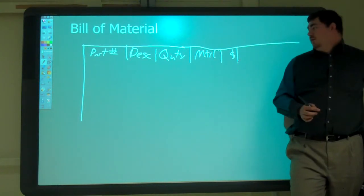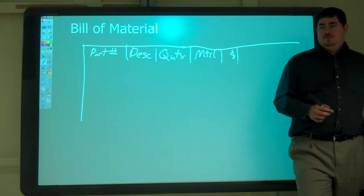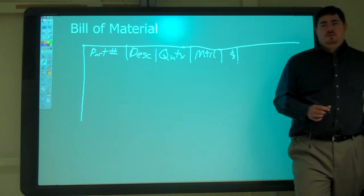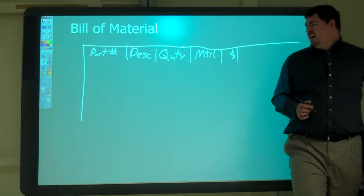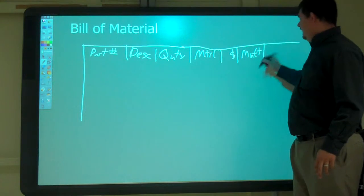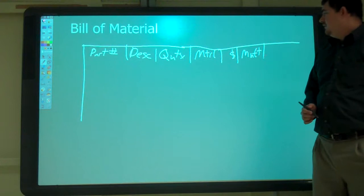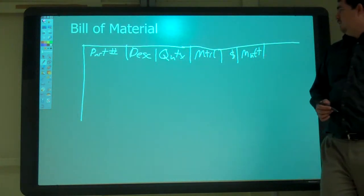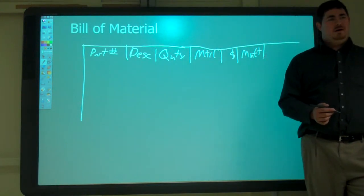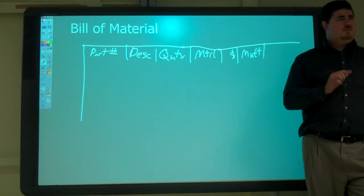What else would we want to know about the overall? Part number, description, quantity, material, cost. If it's a purchase part, vendor - that could be who you're buying it from. There's something else we're missing.